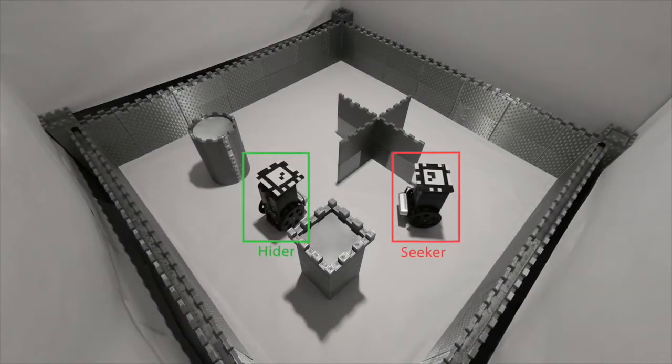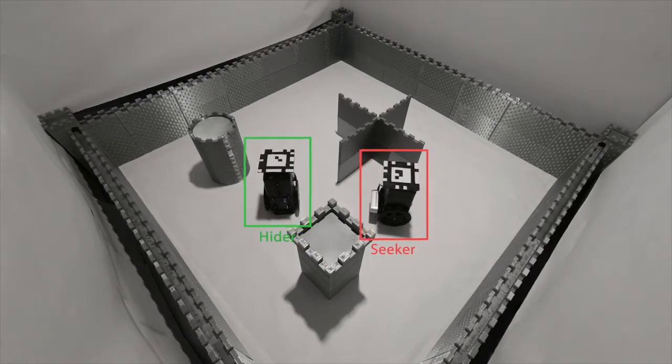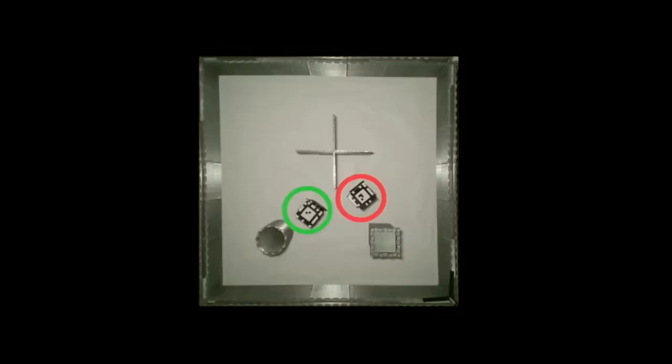In this demonstration the seeker robot follows an expert policy. If the hide-and-seek robot is visible, the seeker will move towards it. If the hide-and-seek robot is not visible, the seeker will instead move to the hider's last known location. The seeker will then explore the environment until the hide-and-seek robot is visible again.